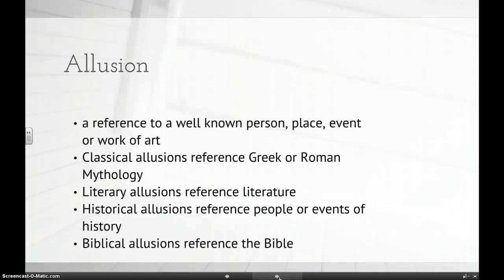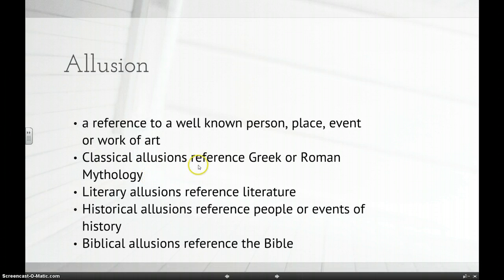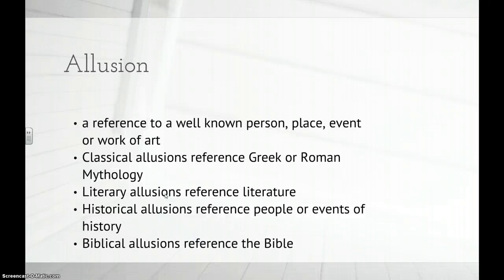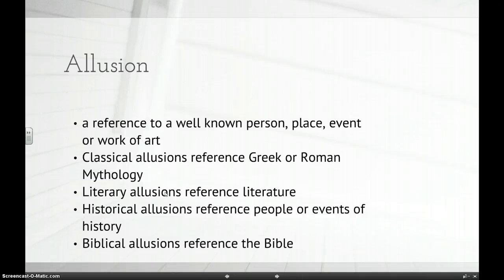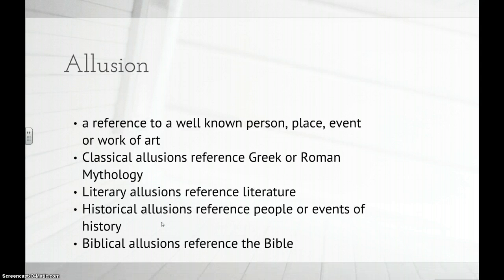When you're reading a piece of literature, it's going to reference one of these things, and it's usually well-known. There are four different types. Classical allusions reference Greek or Roman mythology — things like Zeus or Hermes. Literary allusions are references to literature, often Shakespeare, but can be any work. Historical allusions reference people or events of history, including artwork, battles, or famous people.